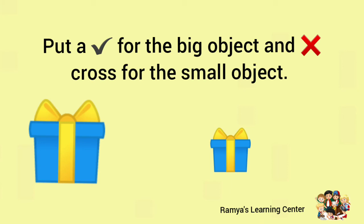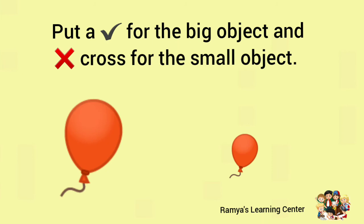Put a tick for the big object and a cross for the small object. The first one is big and the second one is small. The first balloon is big and the second balloon is small.